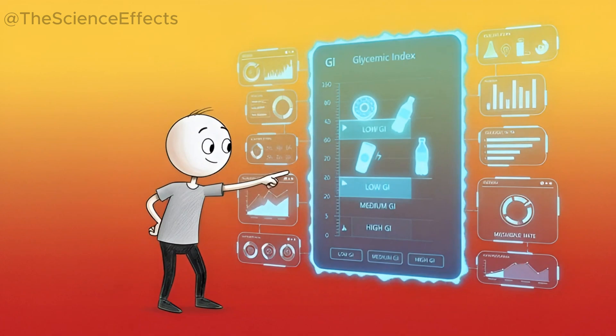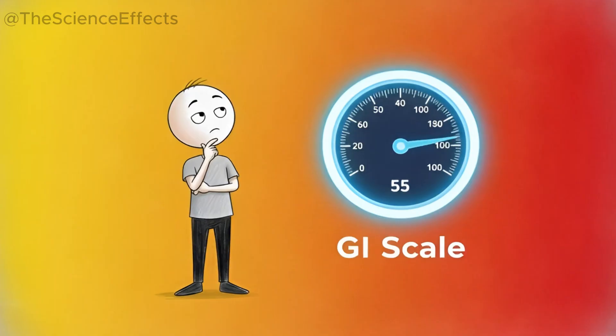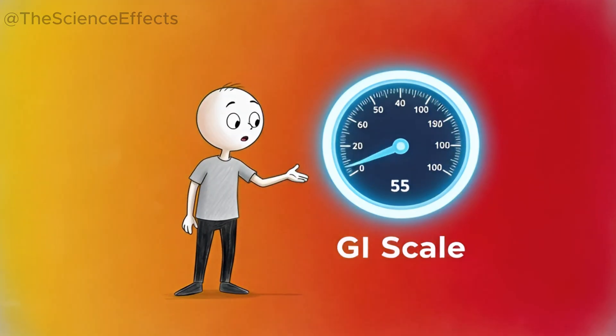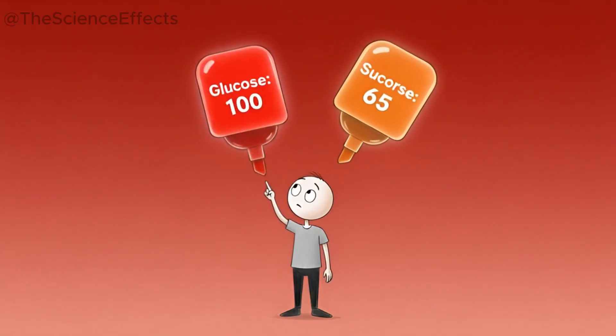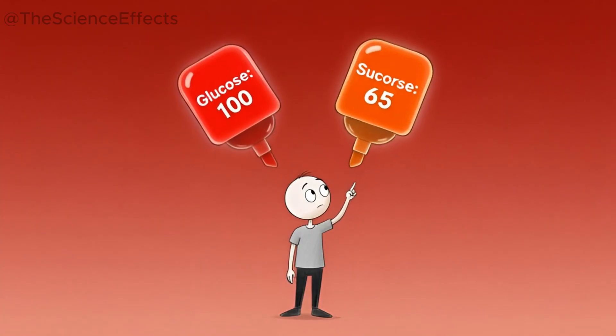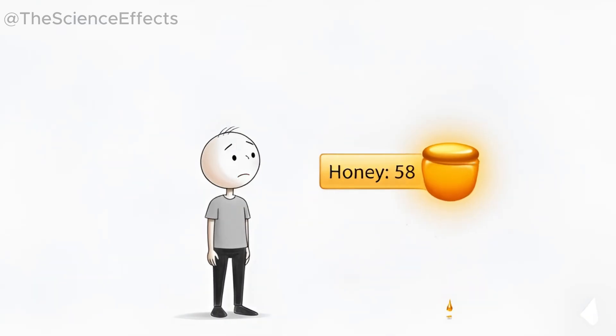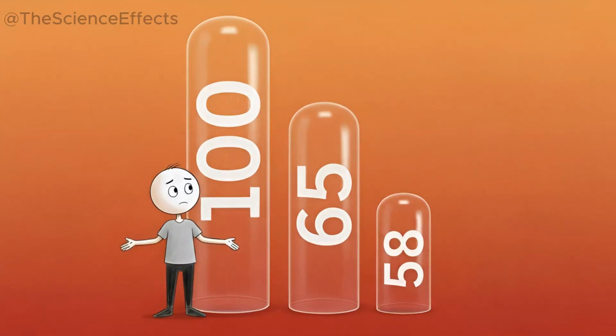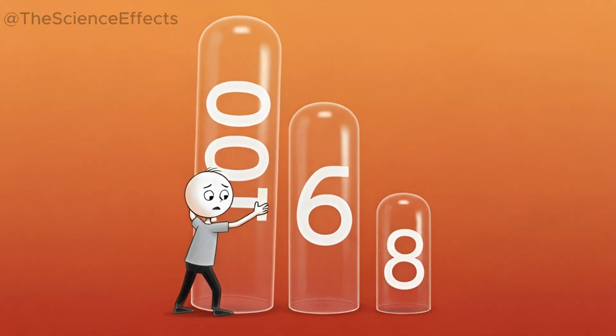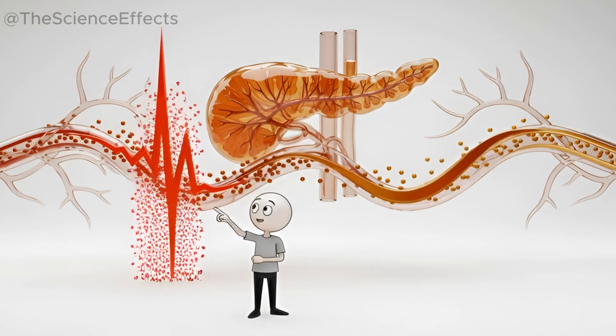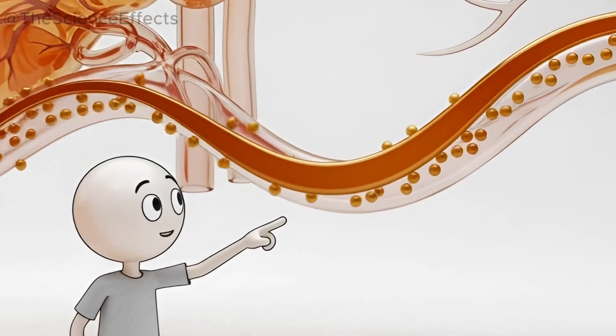This difference in structure leads us to something called the glycemic index, or GI. It's just a scale from 0 to 100 that tells you how fast a food spikes your blood sugar. Pure glucose is 100. Table sugar sits somewhere around a GI of 65. Honey, on average, has a slightly lower GI, around 58. That number can swing wildly depending on the type of honey, but on average, it's a bit lower. The idea is that this slower release of sugar is easier on your body. It's a difference, even if it's a modest one.